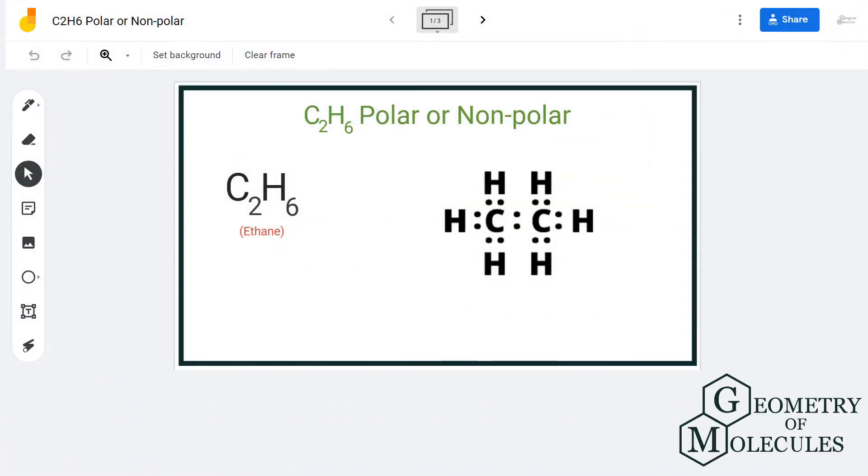Hi guys, today in this video we are going to determine the polarity for C2H6 molecule. It's a chemical formula for ethane and it is made up of two carbon atoms and six hydrogen atoms. To determine its polarity we will first look at its Lewis structure followed by its shape.